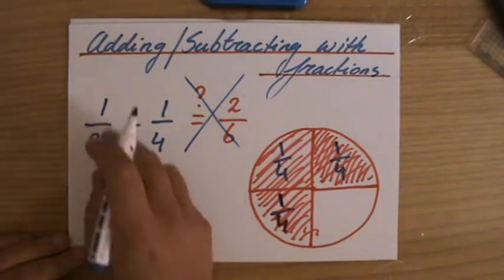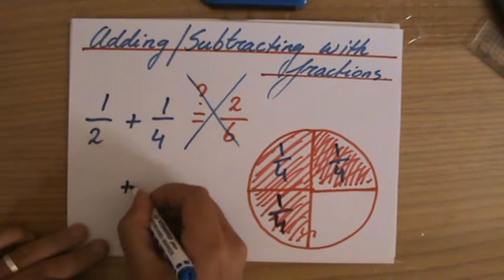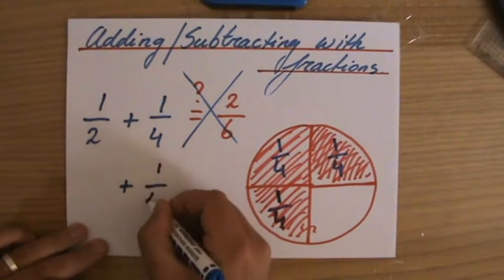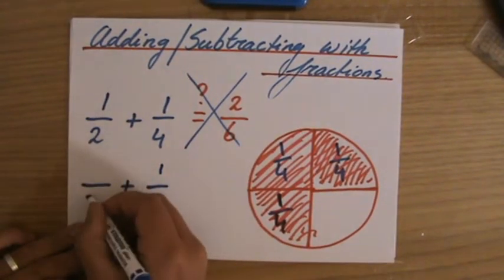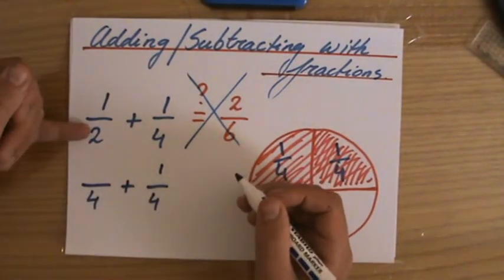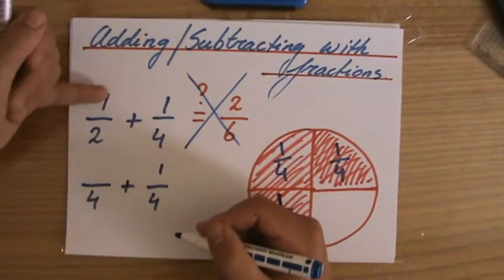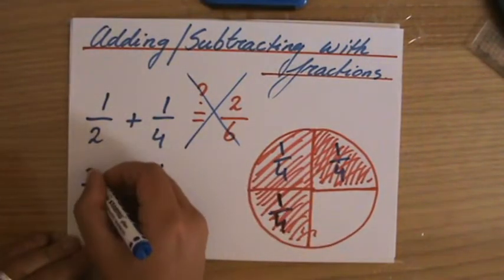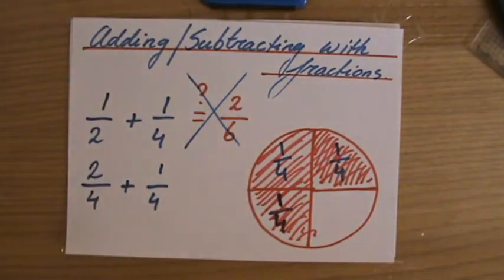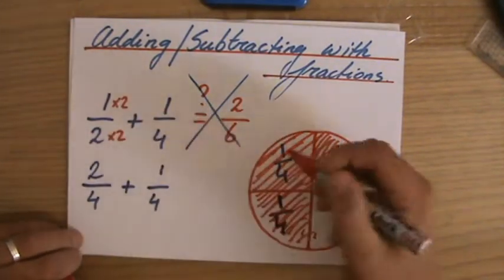Now, one over two. I have to make those denominators the same. Well, hopefully you realize that the two, I can turn that quite easily into a four. Because what do I times two by to get four? I times it by two. Fantastic. Then I have to times the one by two as well. So two over four. One over two is equivalent to two over four.